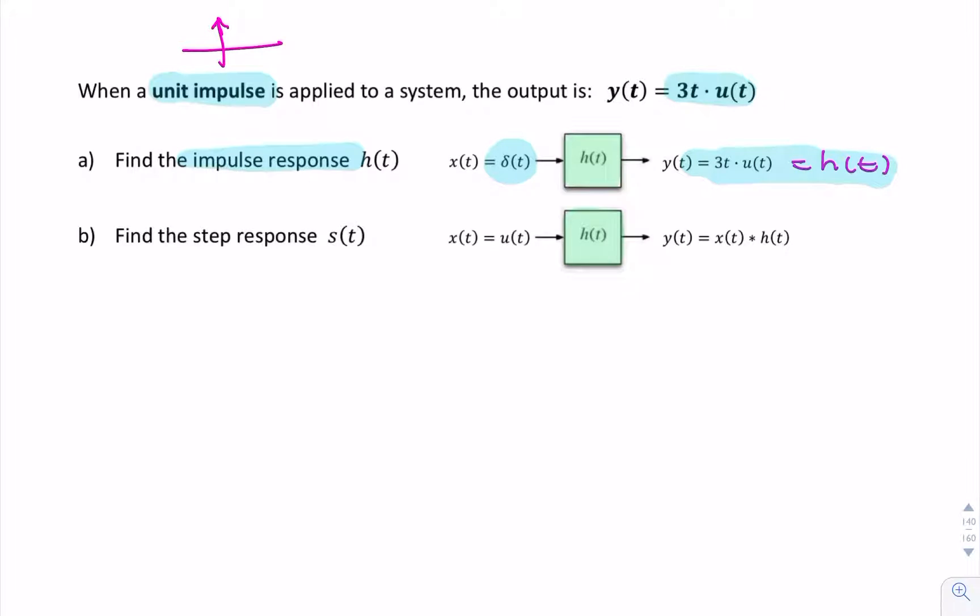But part B asks for the step response. So the step response is the output if the input happened to be a unit step. And we find that by carrying out a convolution integral between the input, the unit step, and the impulse response, which we just found. So y(t) would be the integral from minus infinity to infinity of x(alpha) times h(t minus alpha), d alpha.